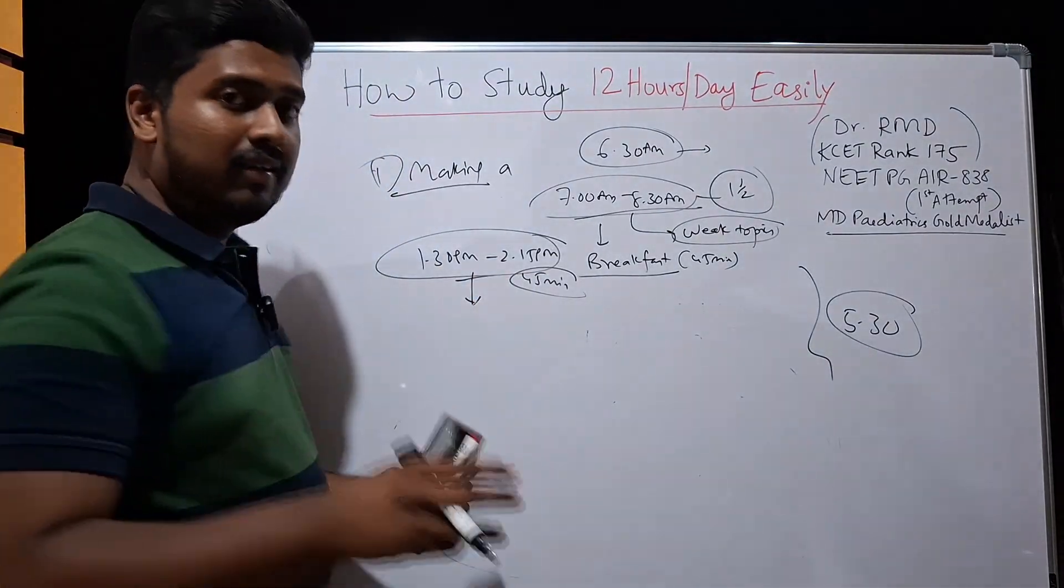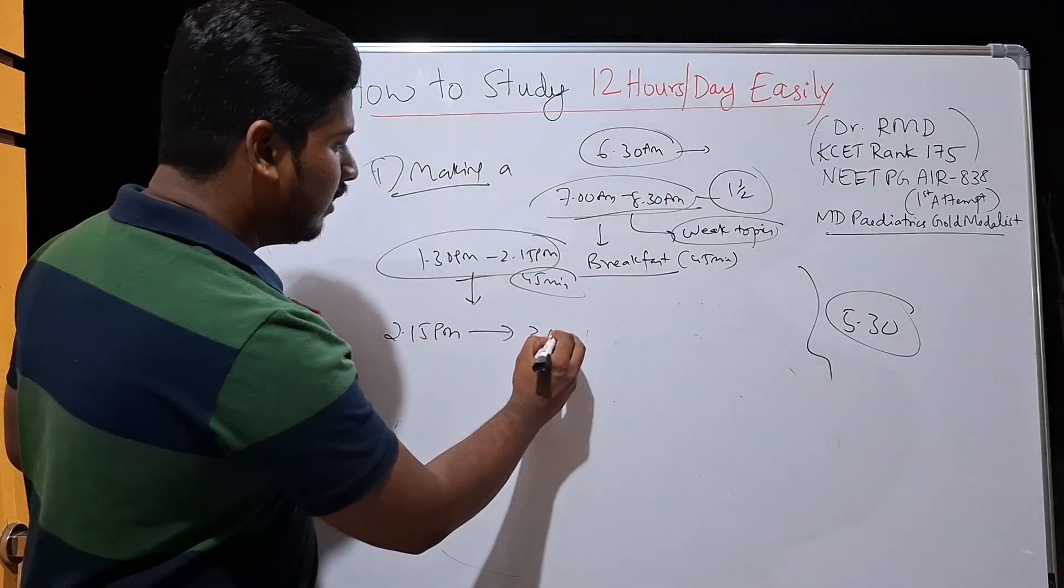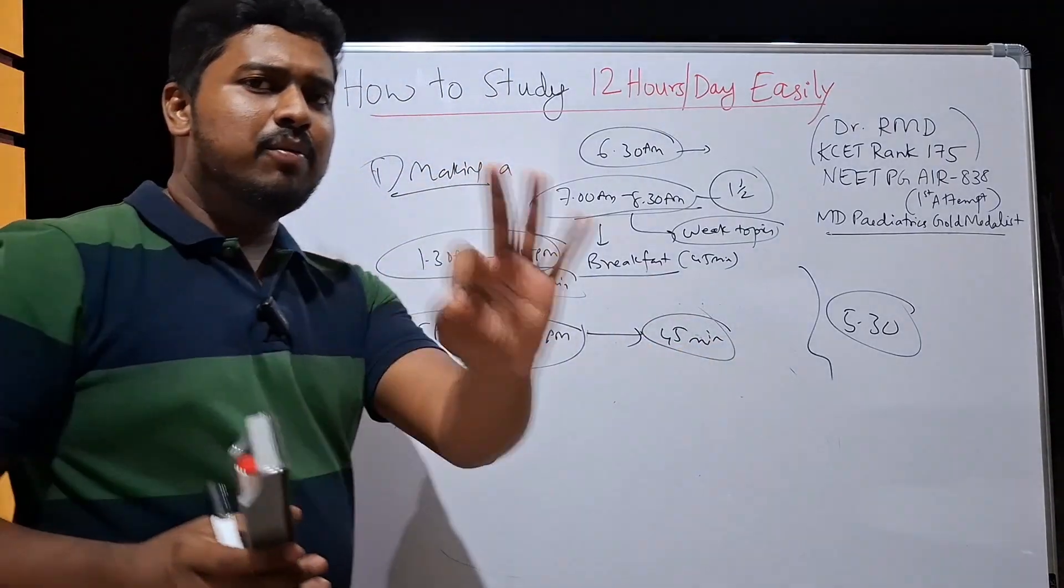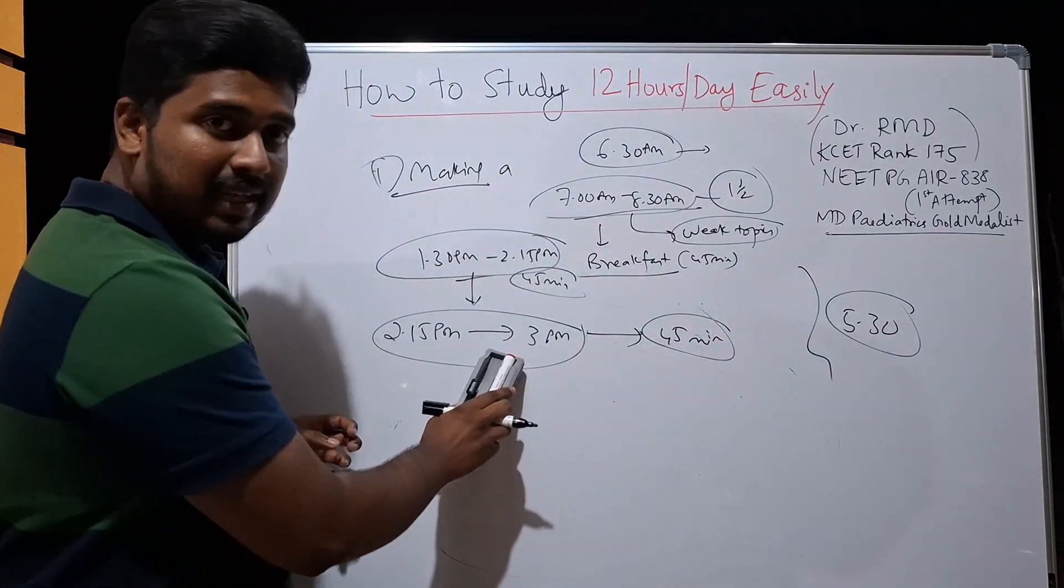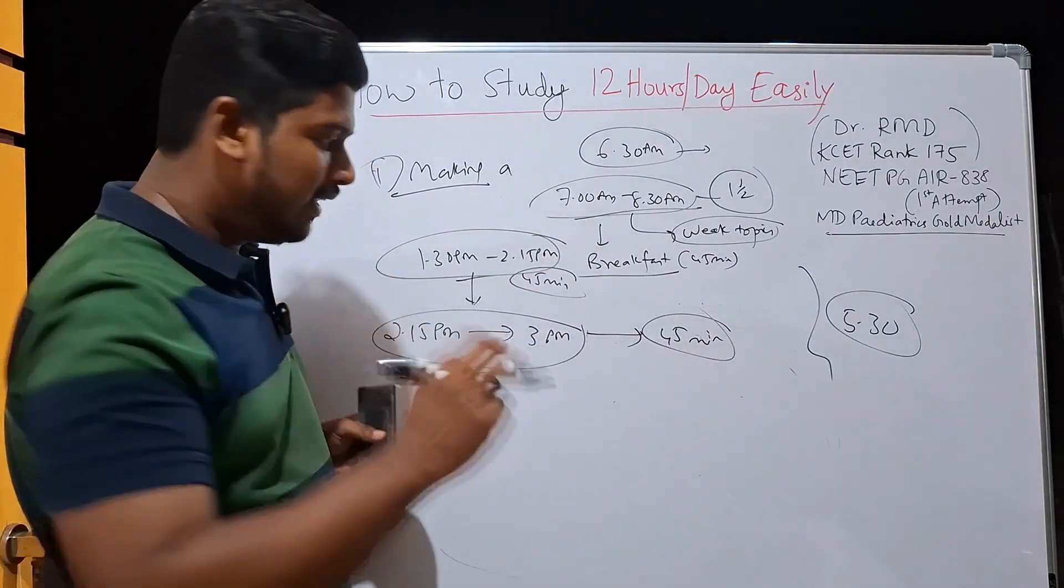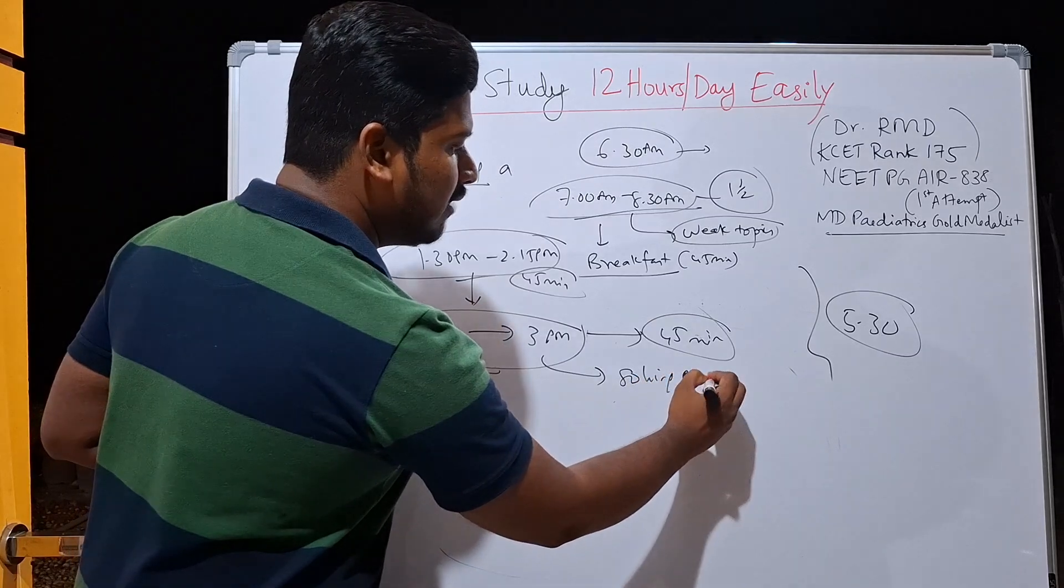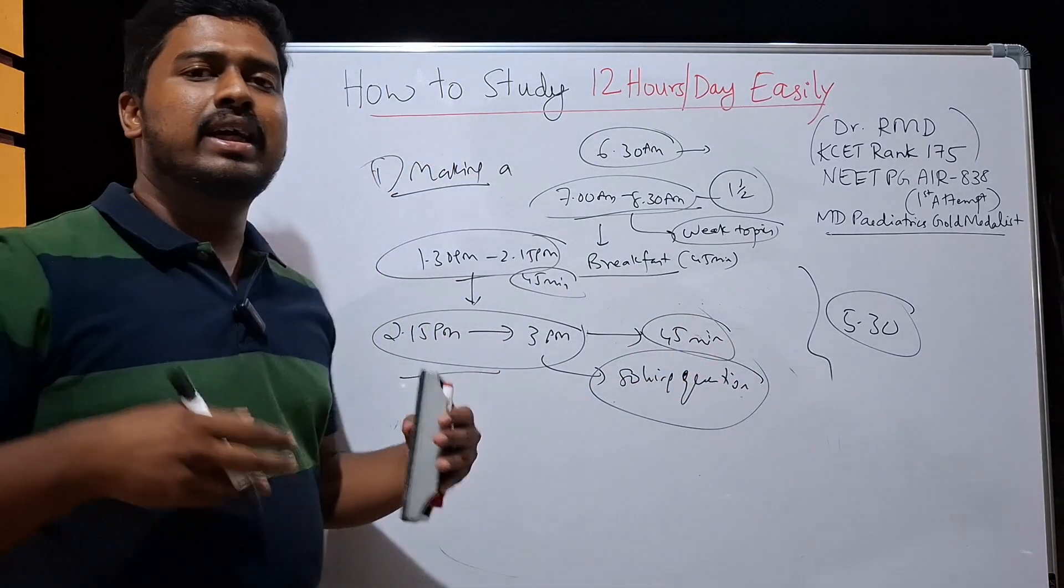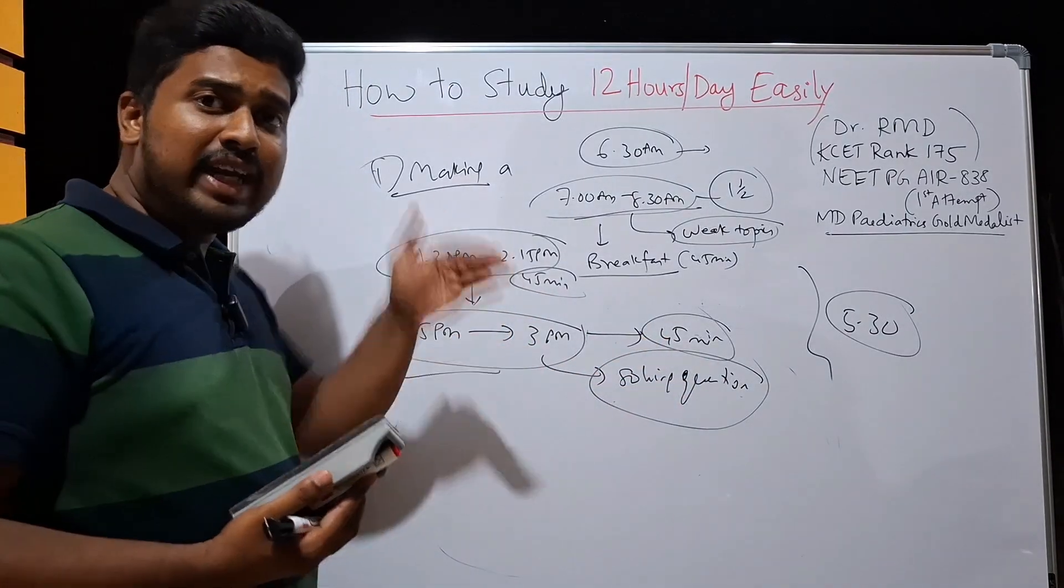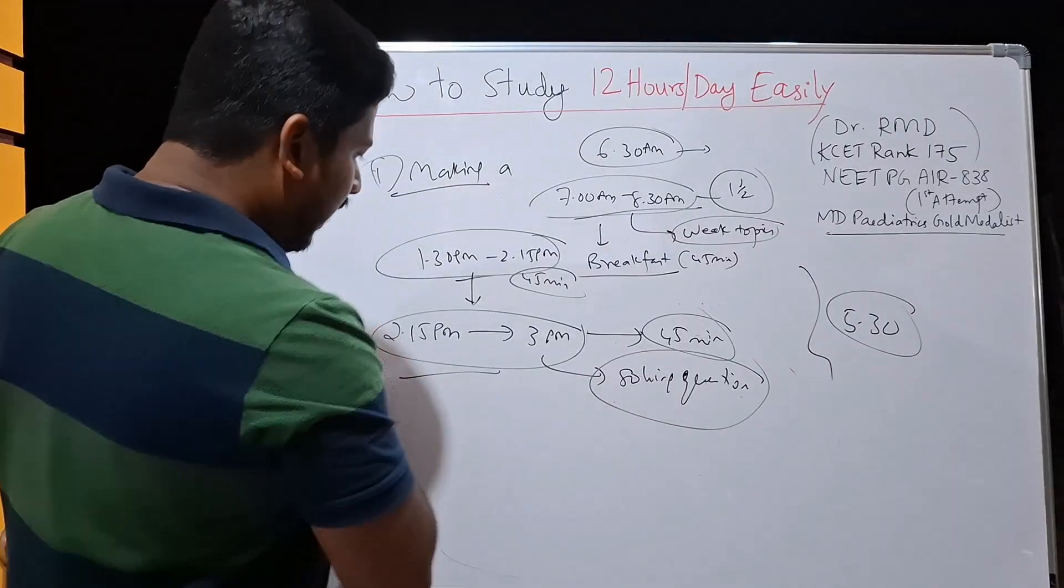Now after this you will start exactly at 2:15 p.m. and you will go till 3 p.m. So this accounts for total 45 minutes. Now it is very important to note that during this time, this is post-lunch session which is a very drowsy session. So during this time you will be giving importance to solving questions. Solving questions, it can be some multiple choice question or it can be exercise type of questions, anything. Because here your brain is at a lower level. It is at its lowermost level right now.